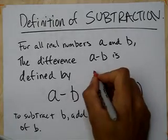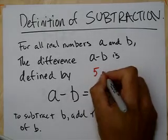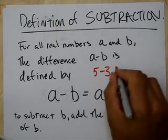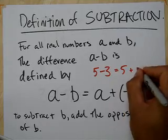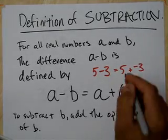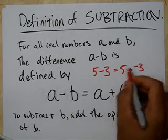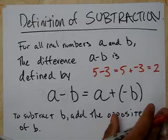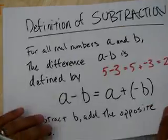So instead of 5 minus 3, I could simply change it to 5 and add to it the opposite of 3. Because if I add the opposite of 3, I have 5 positives, 3 negatives, and I'll end up with 2 positive.